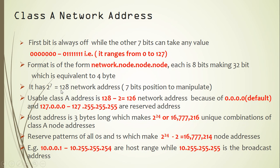Since one bit is fixed, I have seven bits to manipulate, which means I have 2 to the power of 7 unique combinations of network addresses. However, two results are reserved: the first is the default route and the second is the loopback address for testing the IP stack of a host. Subtracting these two, I have 126 network addresses left.